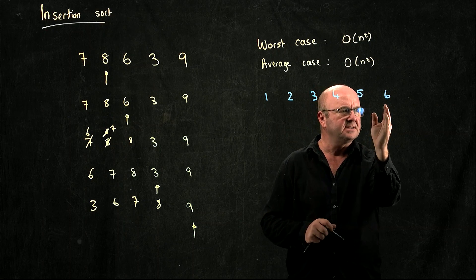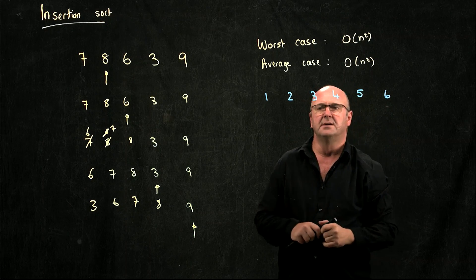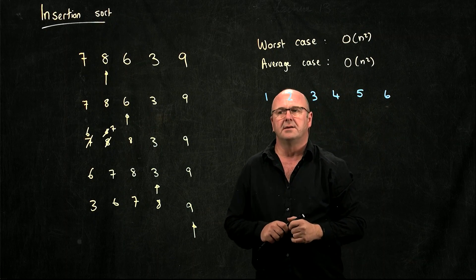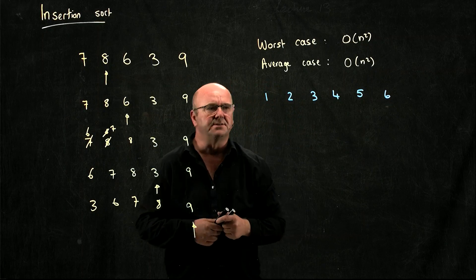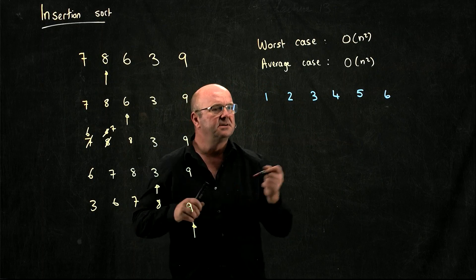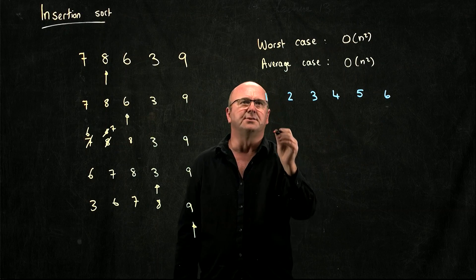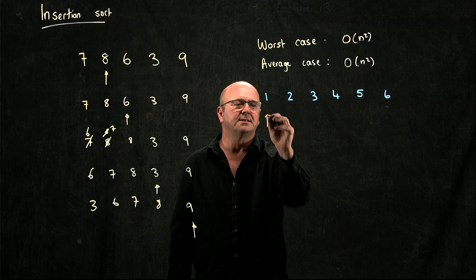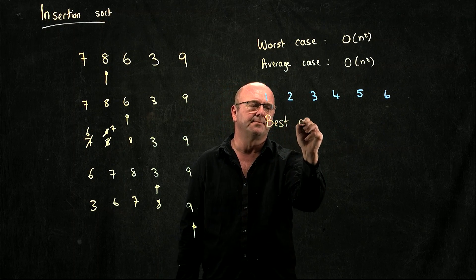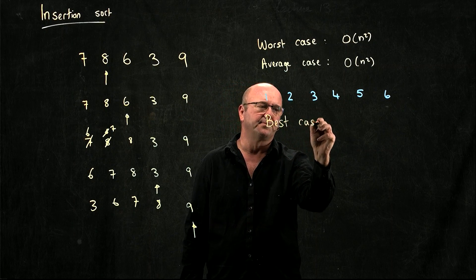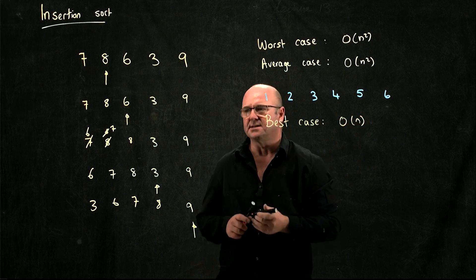So in a sorted list, the insertion sort has a best case complexity of big O of n.